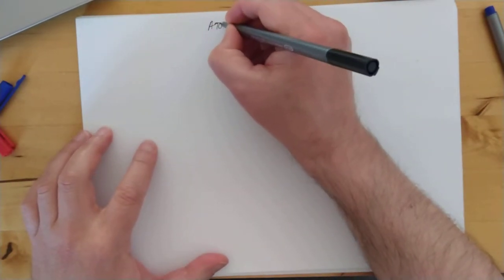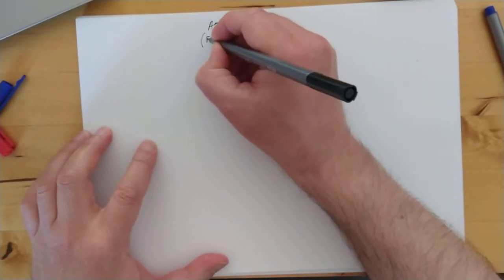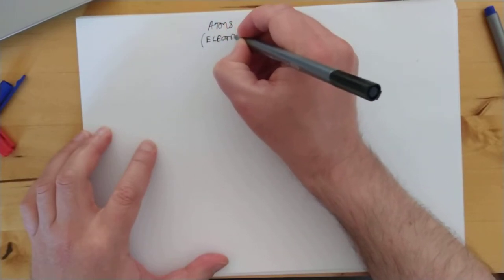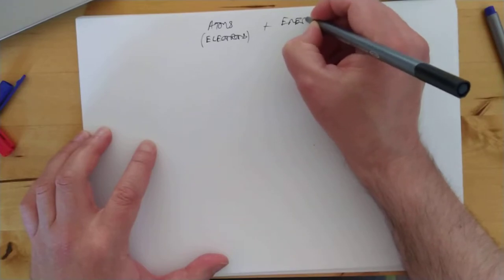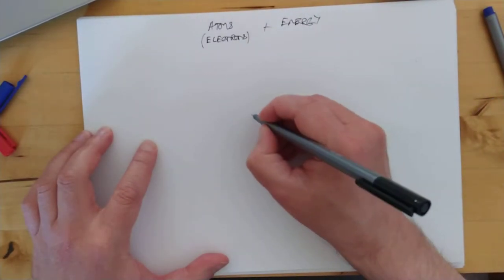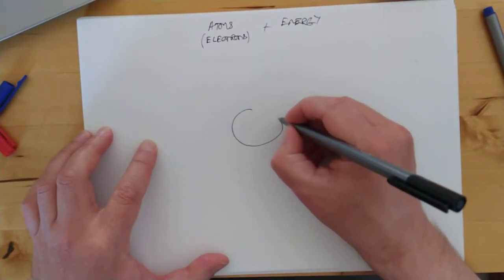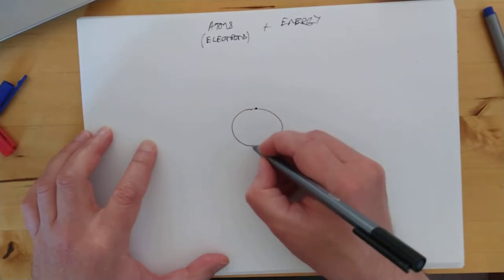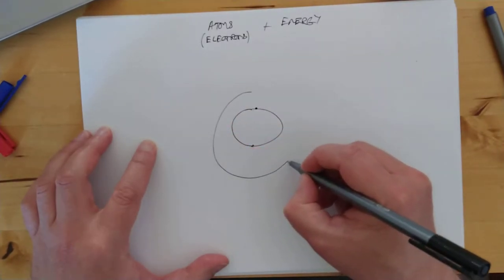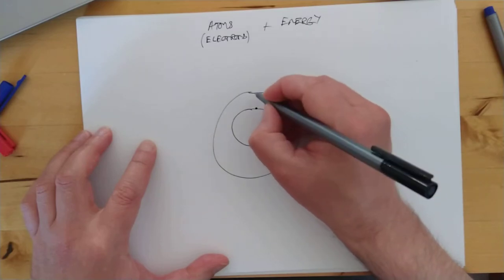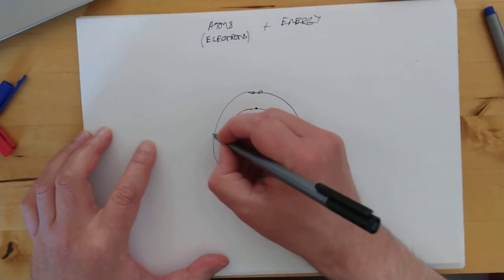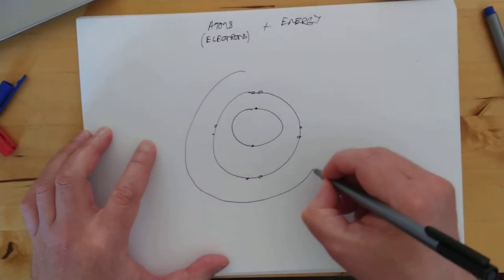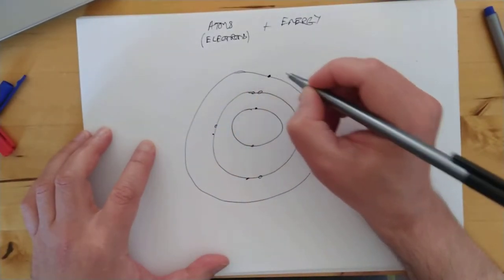So I want to talk about atoms and energy. Actually specifically, I want to talk about electrons and energy. Here's how we used to draw our atoms. And life was nice and simple back in third year. And there's our outer electron.